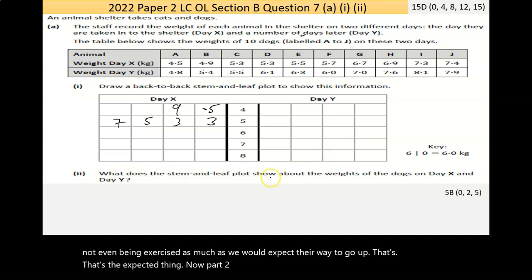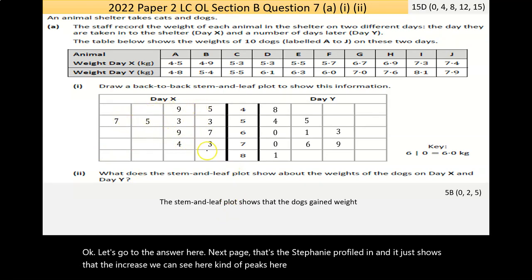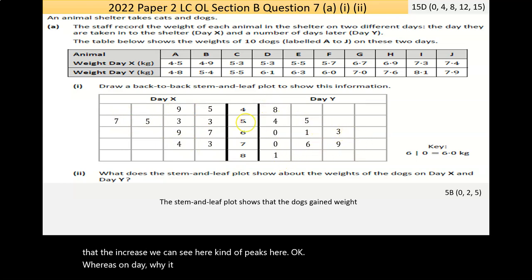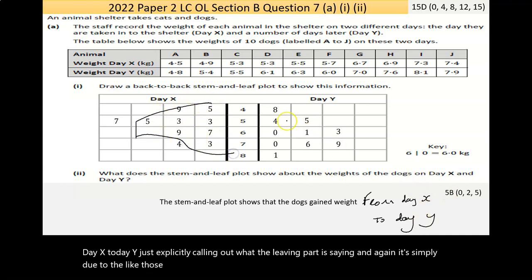Now, part 2 says, what does the stem and leaf plot show about the weights of the dogs on day X and day Y? So let's go to the answer here in the next page. So that's the stem and leaf plot filled in. And it just shows that they increased weight. You see here, it kind of peaks here. Whereas on day Y, it peaks later. But even looking at the data itself, it's entirely possible that we should be more explicit in our answer there. And maybe I should have added in from day X to day Y, just explicitly calling out what the leaf plot is saying.